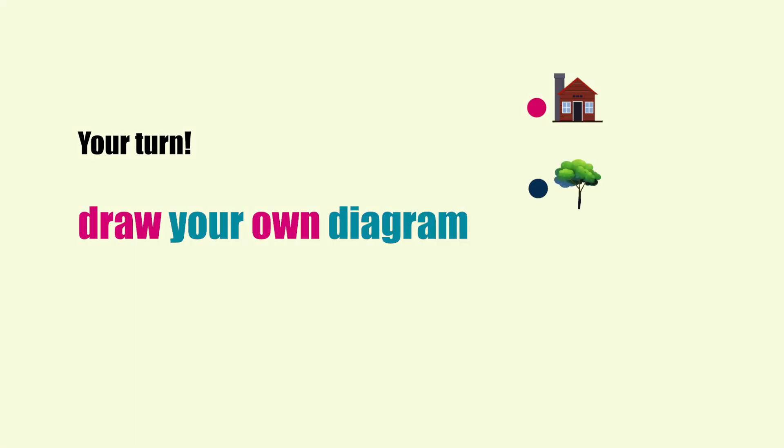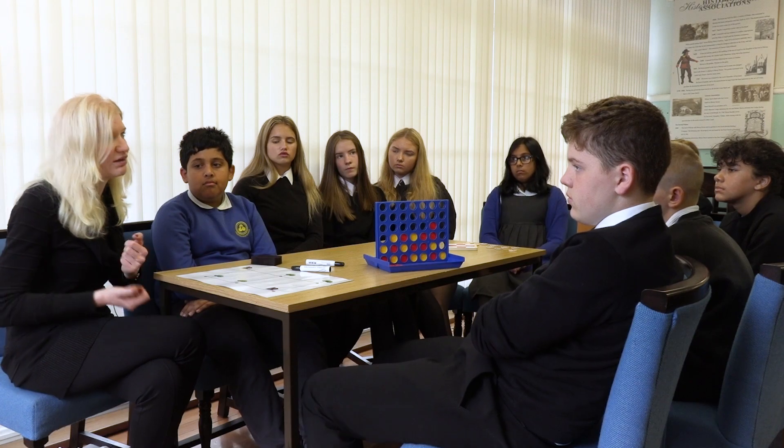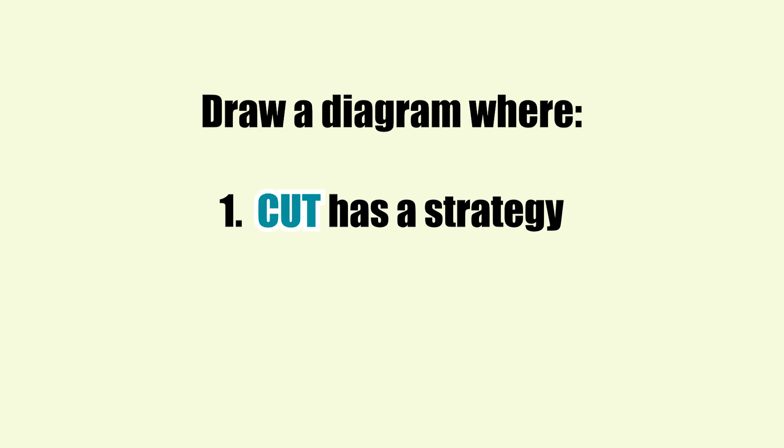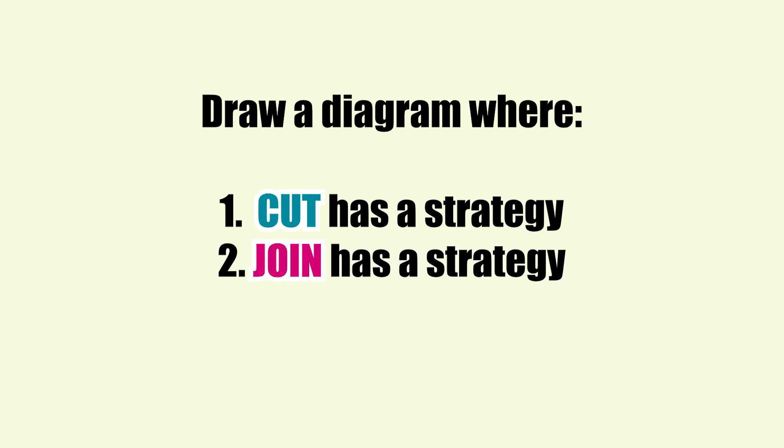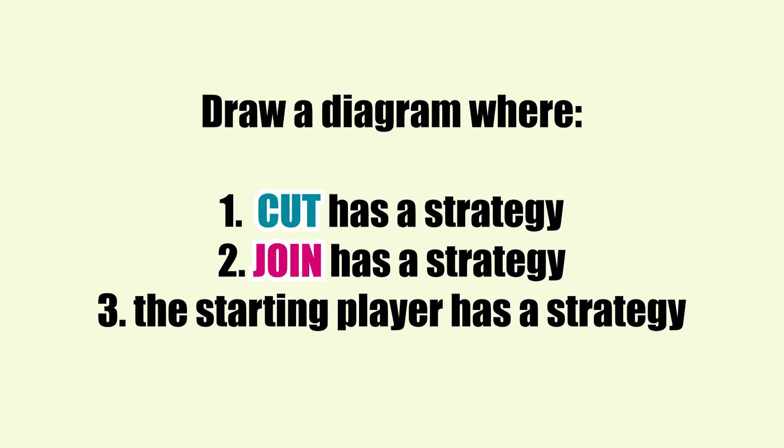Now you can try and draw your own diagram and challenge your friends and classmates. Try to draw a diagram where Cat has a strategy, or a diagram where Join has a strategy, or a diagram where the first player has a strategy. Try to understand why that player has a strategy. You can email us your diagrams — we will use the most interesting ones for our activities, and if you want, we can write your name on them so you will be famous. If you want a hint on how to understand which player has a strategy, look at our website.